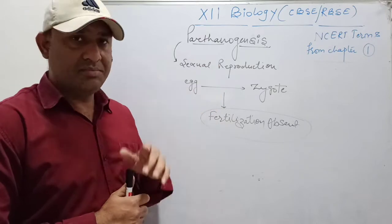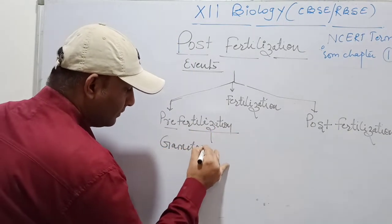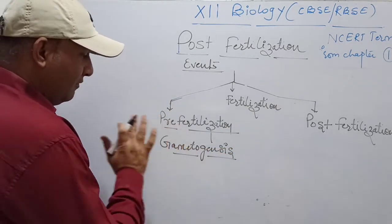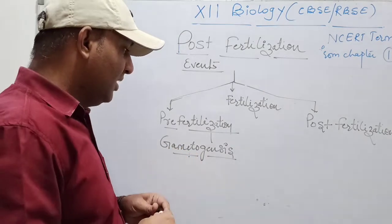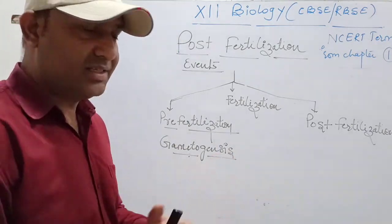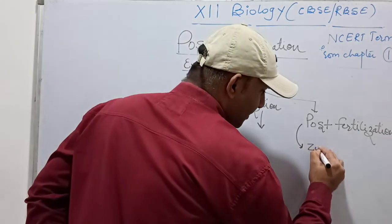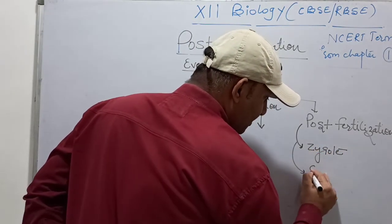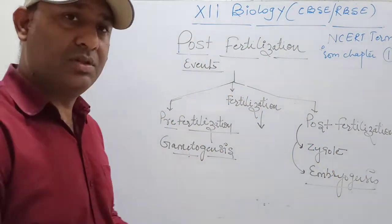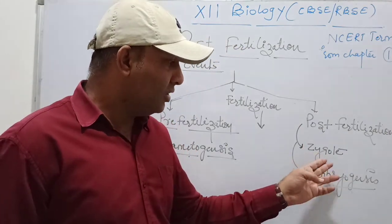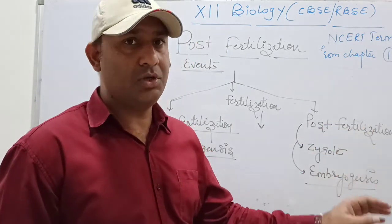Now, pre-fertilization events: gametogenesis — the process by which gametes are formed. Gametogenesis can be bifurcated into animals and plants and will come in the next chapter. Fertilization means the fusion of gametes. Post-fertilization events — after fertilization — include zygote formation, then embryogenesis, meaning the zygote develops into the embryo, the embryo develops into the fetus, and then the child. In case of plants, the zygote develops into the embryo, embryo into the seed, and then the seed further develops into the fruit.